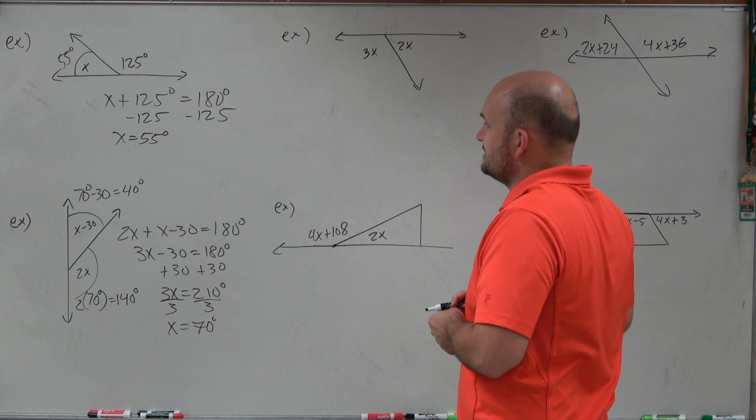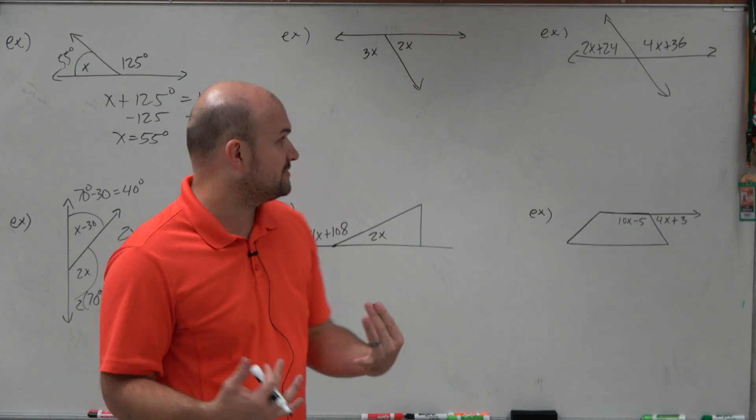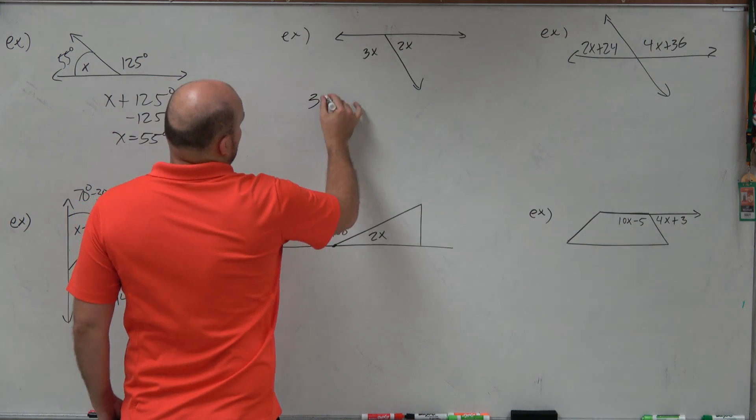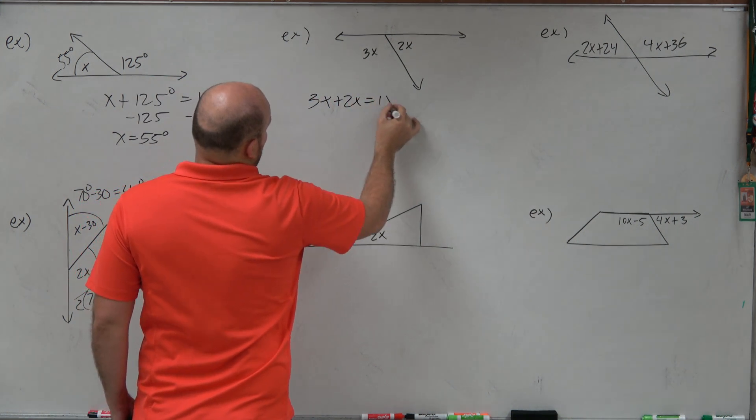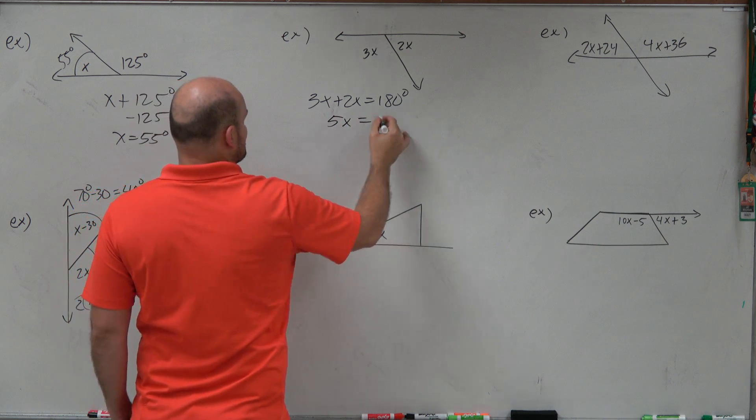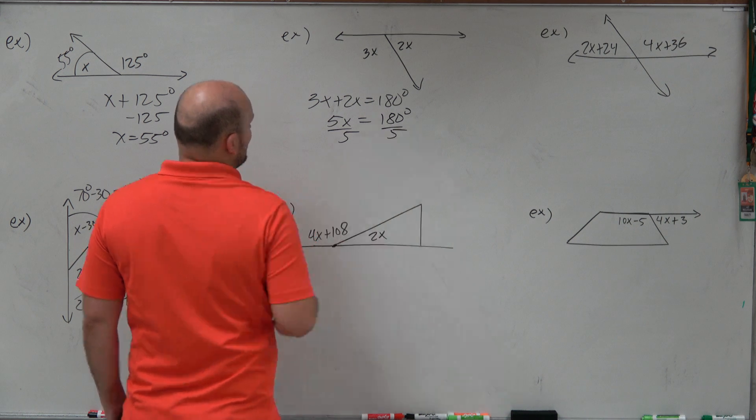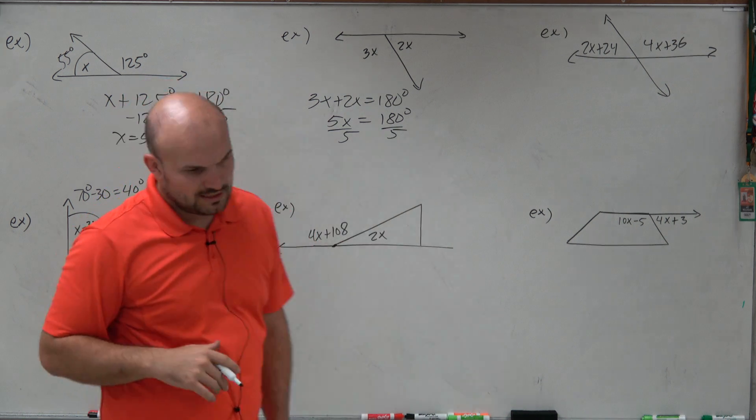Let's kind of look over in this example. Here's just another one, 3x plus 2x. We know that they make up a straight angle. So therefore, I can say 3x plus 2x is equal to 180 degrees. So therefore, that's 5x is equal to 180 degrees. Divide by 5, divide by 5.